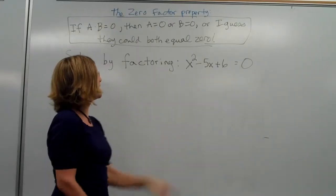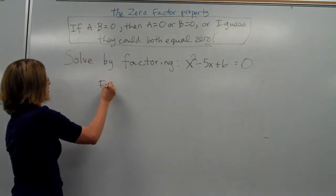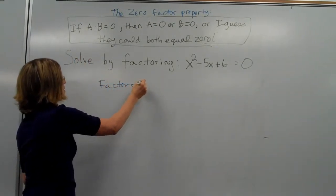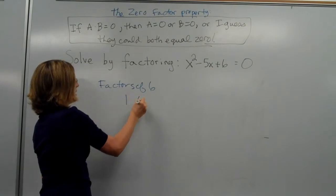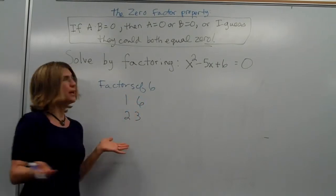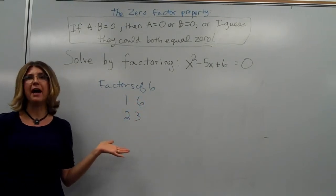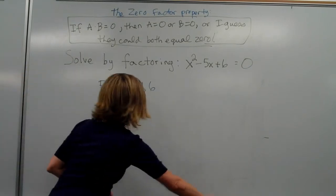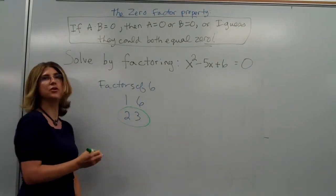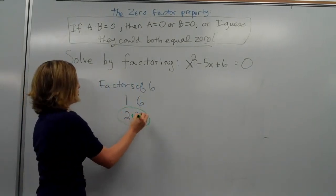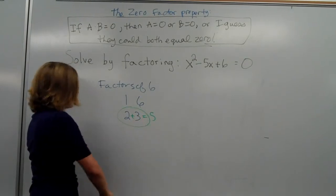So, the first things I think of are all the factors of six. The factors of six are one and six and two and three. Which of these two add up to give five? Well, it's pretty clear that these are the two that would add up to be five, right? Because two plus three equals five.